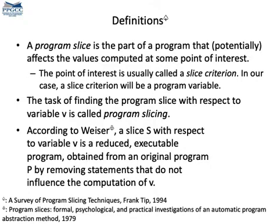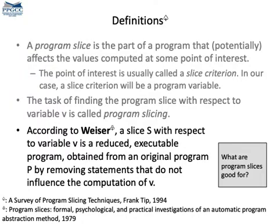The slice regards a statement within a program. It is the subset of the program that affects the execution of that statement. We call this statement a slice criterion, using jargon introduced by Weiser in 1979. We shall adopt the definition of slices due to Weiser, and in that paper, a slice was defined with respect to a statement S as the subset of the program whose execution produces on S the same effect as the execution of the entire program.